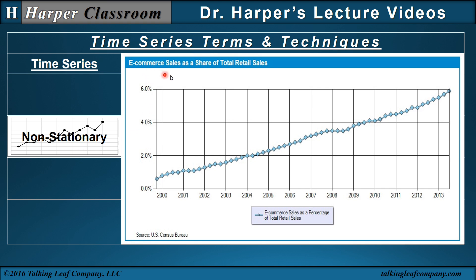Non-stationary: e-commerce sales as a percentage share of total retail sales, from the US Census Bureau. This is a fairly linearly increasing line, so it's a non-stationary time series. In 2008 there's an anomaly — it looks like it flattens out, then goes back to the trend line. We know in 2008 there was a recession, so a recession could be another causal factor. There are two mechanisms here: patterns within the time series itself, and outside causal factors — that's called causal forecasting.